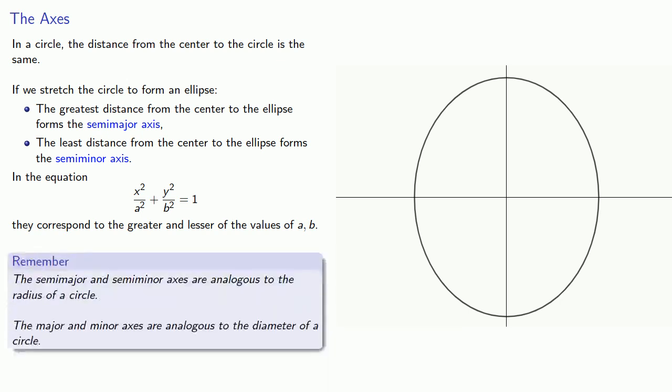It may be helpful to remember that the semi-major and semi-minor axes are analogous to the radius of a circle, and the major and minor axes — no 'semi' — are analogous to the diameter of a circle.